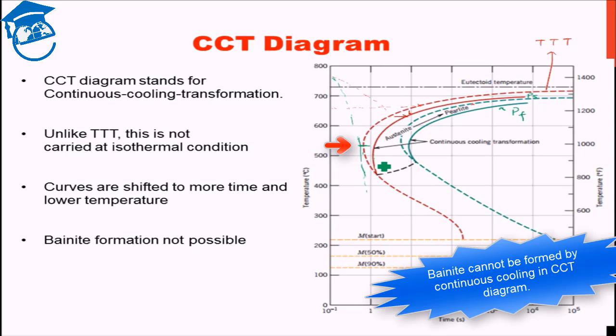In this curve, there is no way you are going to again hit the bainite start curve. Therefore, during continuous cooling, you cannot form bainite. Bainite cannot be formed during continuous cooling.